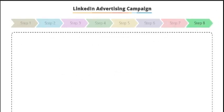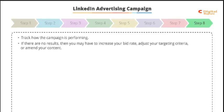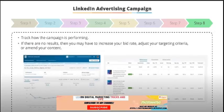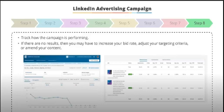Step eight: the final step is for us to launch the campaign. Once we've done that, it's advisable to keep tabs on how the campaign is performing. If we're not seeing the results we were aiming for, we may need to increase our bid rate, adjust our targeting criteria, or even amend the creative. LinkedIn offers real-time campaign metrics so that you can track and report on the campaign's performance.